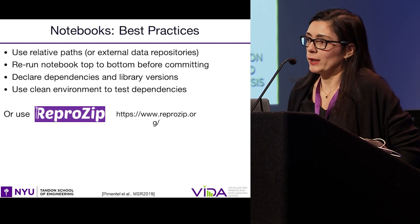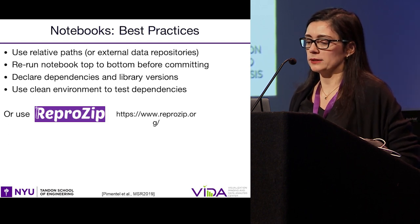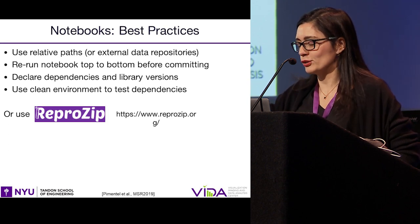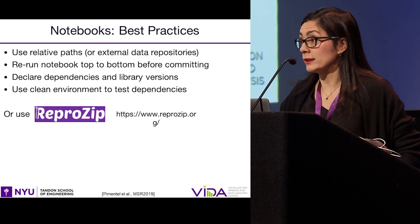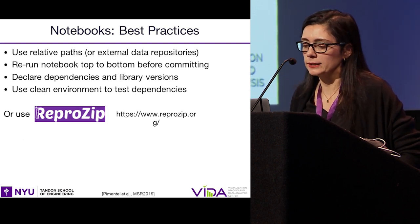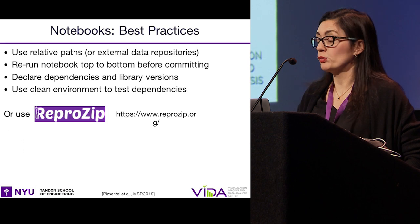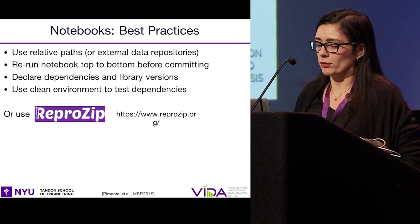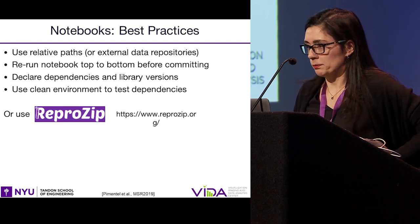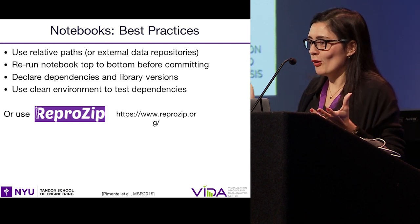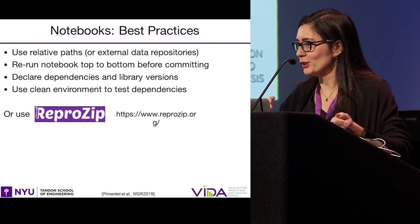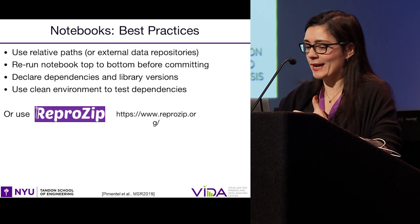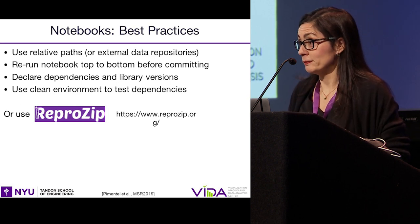Even in a tool that is supposed to help people work in a reproducible way, you can have serious problems. With Jupyter, you can try to avoid these by following a set of best practices, like using relative paths or external data repositories that can work across different computing environments. Before you commit and save your notebook to GitHub, you should rerun top to bottom so that things are consistent. You should declare your dependencies and library versions and use a clean environment to test them. But if you're just doing data exploration, all of this sounds very hard to do.